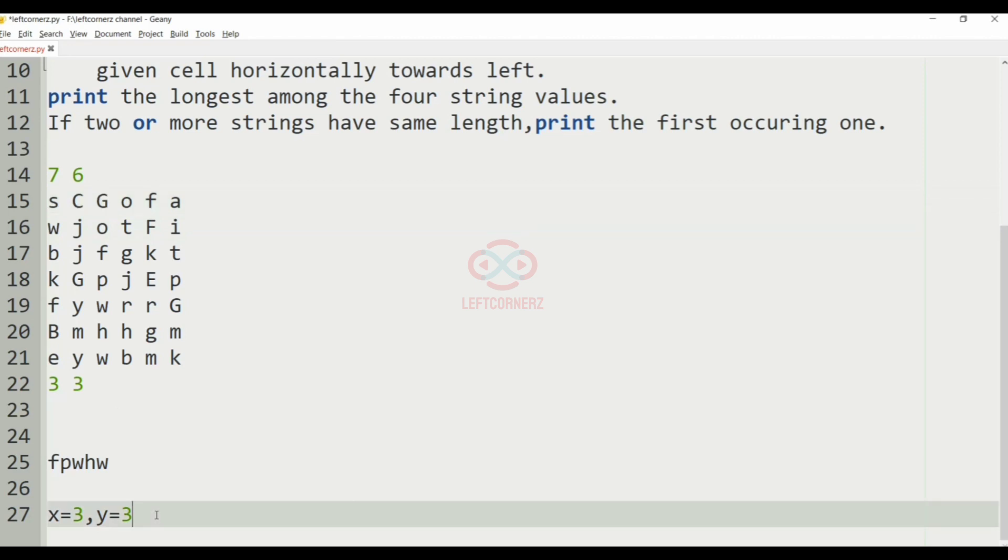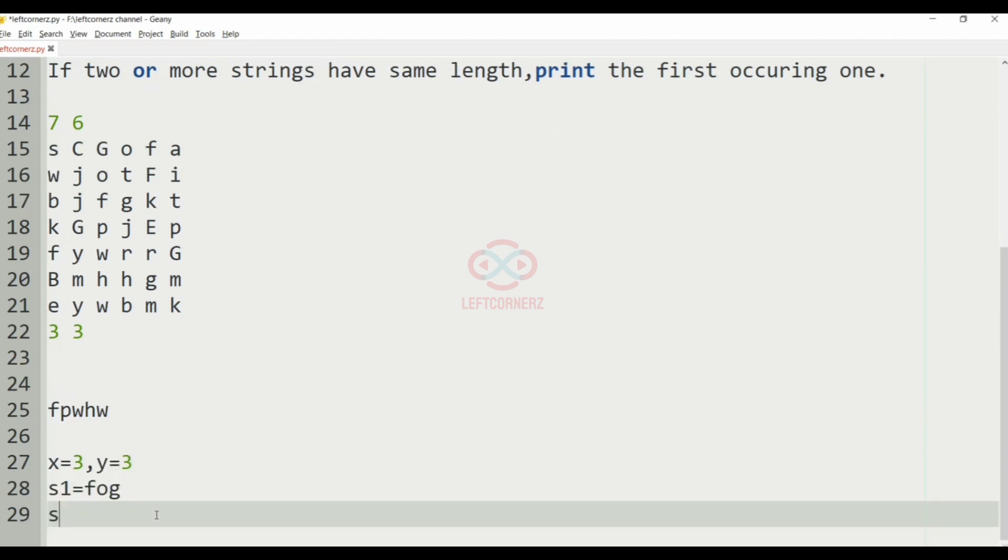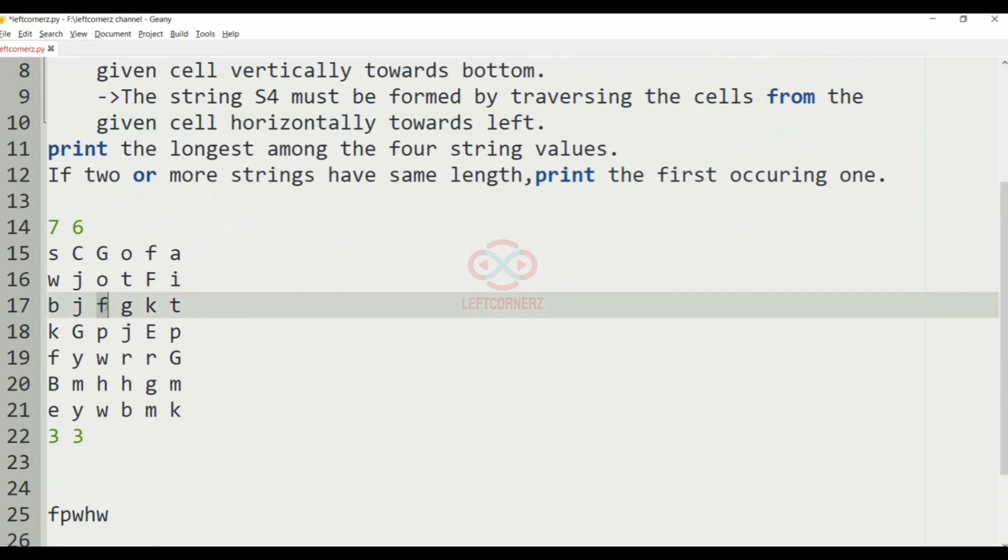So our S1 will be F O G, and then our S2 will be horizontally towards right, so it will be G K T.